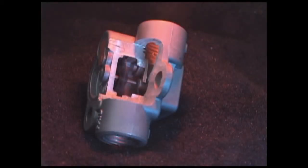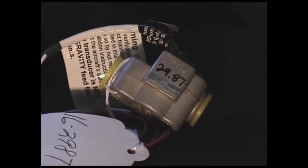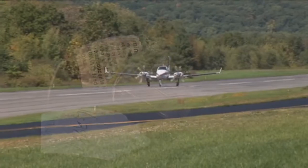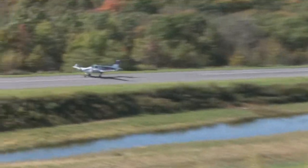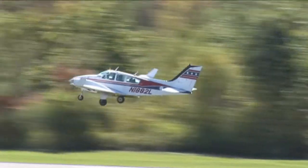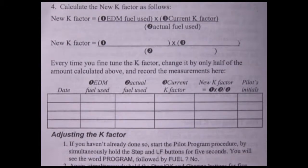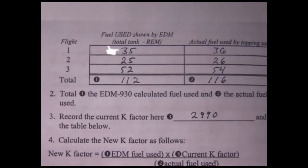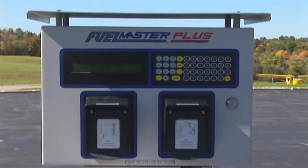The K factor is shown on the fuel flow transducers as a four digit number, which is the number of pulses generated per gallon of fuel flow. You may have to do a one-time fine tuning of the K factor setting in the EDM 960. Make at least three flights and note the amount of fuel used as shown by the EDM 960 and the amount of fuel used when topping the tanks. In the pilot's guide there is a table for you to enter this information. If the columns comparing indicated with actual used fuel are about equal, no further adjustment needs to be made. But if the amounts are different by more than 5%, then some adjustment to the K factor should be made.